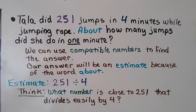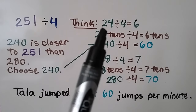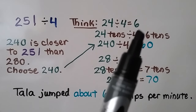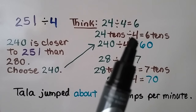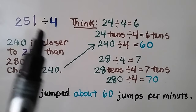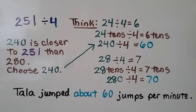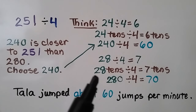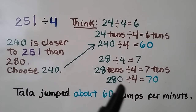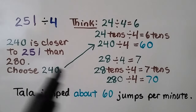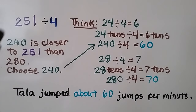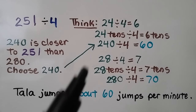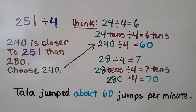We think: what compatible number is close to 251 that divides easily by 4? We can use the fact that 24 divided by 4 equals 6, so 24 tens divided by 4 equals 6 tens — that's 240 divided by 4 equals 60. We can also use 28 divided by 4 equals 7, so 28 tens divided by 4 equals 7 tens — 280 divided by 4 equals 70. Since 240 is closer to 251 than 280 is, the estimate of 60 would be a better estimate.